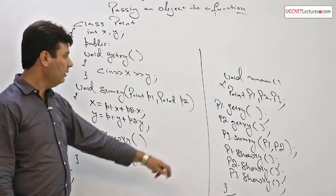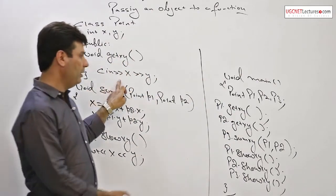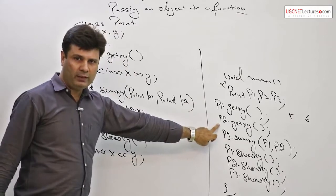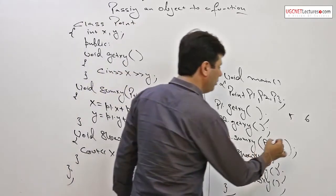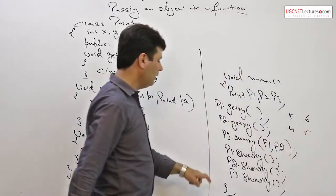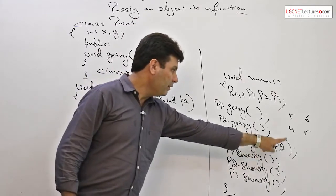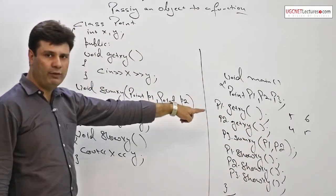Let us make a dry run. p1 dot get xy function will invoke if user inputs 5 and 6. p2 dot get xy, again the function will invoke by another object p2, let us assume user will input 4 and 5. p3 dot sum xy, p3 is having nothing. p1 and p2 are having values of 5, 6 and 4, 5.